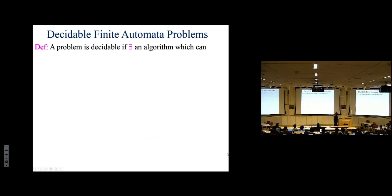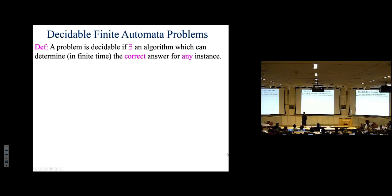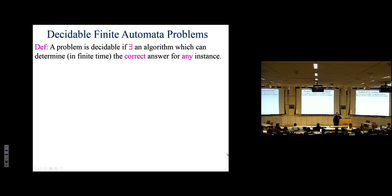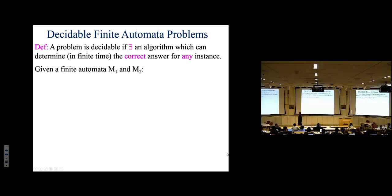A problem is decidable if there's an algorithm for it — it doesn't matter how efficient or inefficient — because some problems don't have algorithms at all, like the halting problem. An algorithm has to be correct in every instance; it can't be correct sometimes and incorrect other times. A stopped clock is right twice a day — that's no big feat and doesn't do you much good.